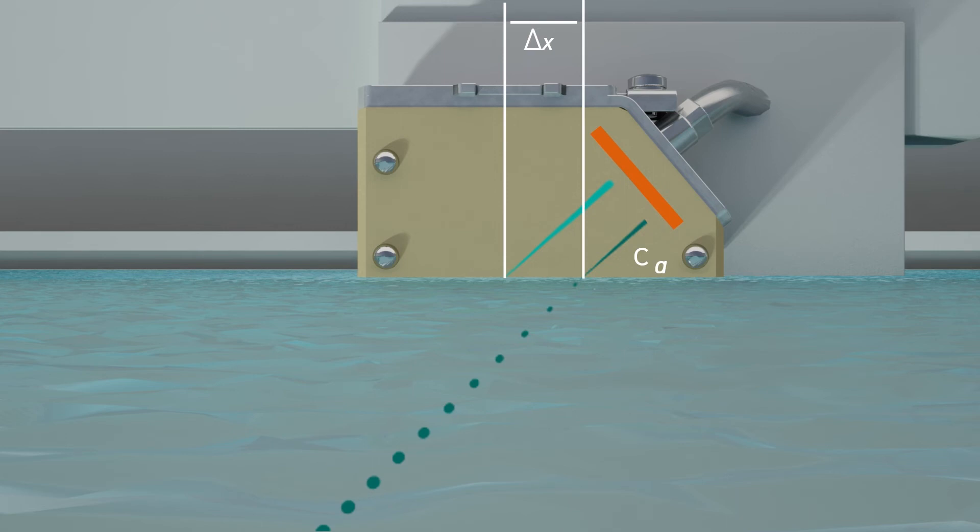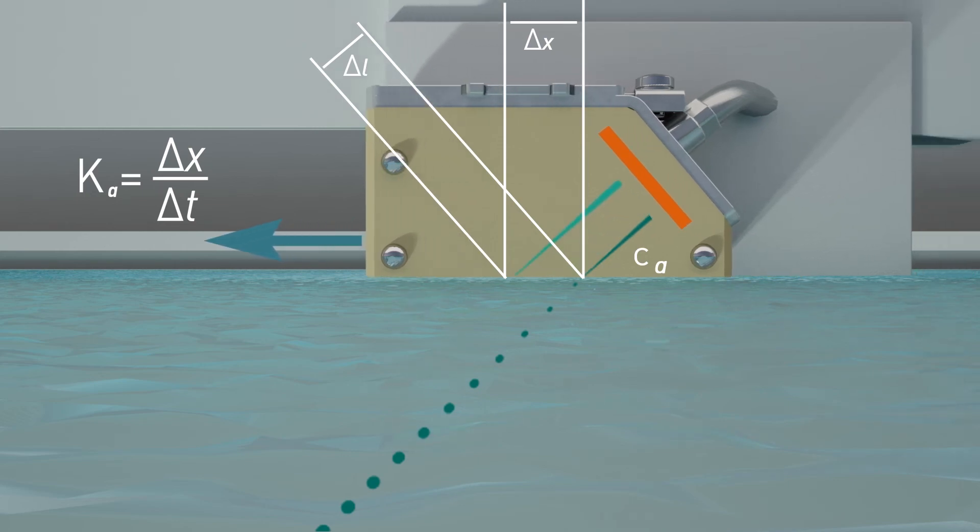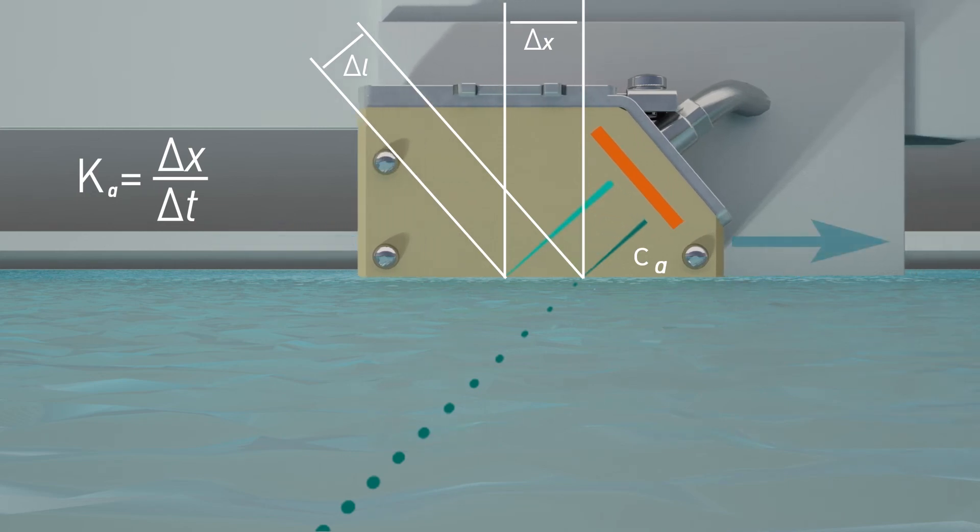This shift causes a decrease in the ultrasonic signal's path length by delta l and, accordingly, a decrease in total transit time by delta t. As the transducer constant is the ratio of the local shift to the change in transit time, the aperture calibration allows for the most direct and thus the most precise calibration possible.